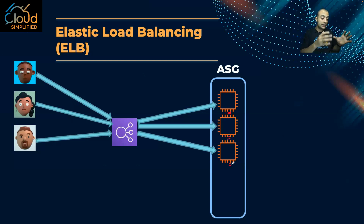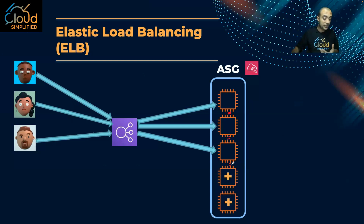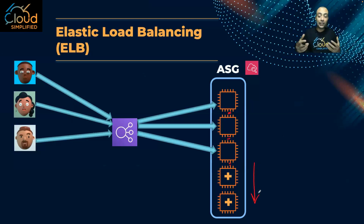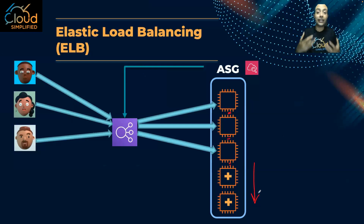Now imagine the servers are becoming overloaded. ASG will detect that we are above the configured threshold and will create extra instances — that's scaling out. Auto scaling then updates the ELB, telling it that two extra EC2 instances have been added, and that for the next incoming traffic, it should start distributing the load across these extra instances.